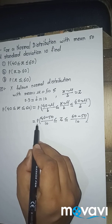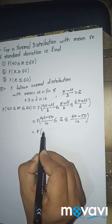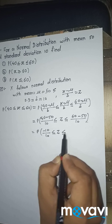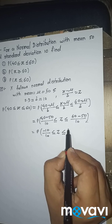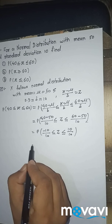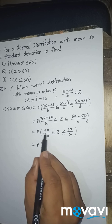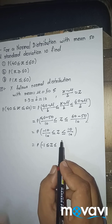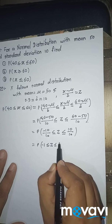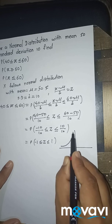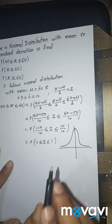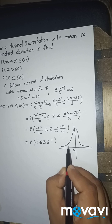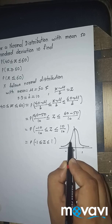This equals the probability of −10/10 ≤ z ≤ 10/10, which is the probability of −1 ≤ z ≤ 1. We need to find the area between z = −1 and z = 1. Because of symmetry, the area from −1 to 0 equals the area from 0 to 1.